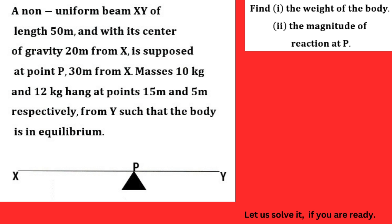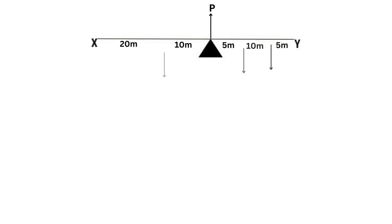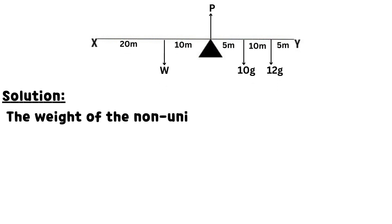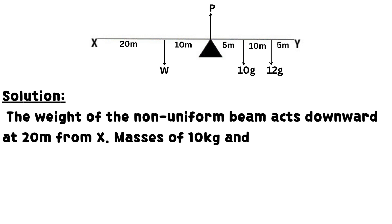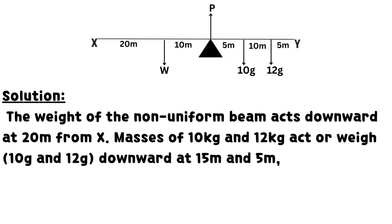Find the weight of the non-uniform beam and the magnitude of reaction at P. The weight of the non-uniform beam acts downward at 20m from X. Masses of 10 kg and 12 kg act downward at 15m and 5m, respectively, from Y.